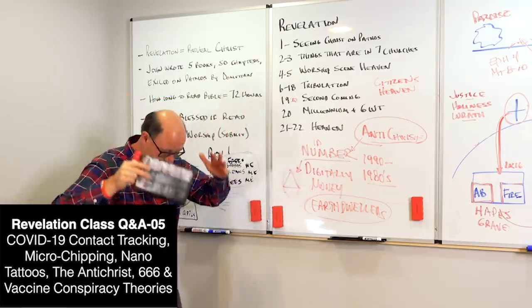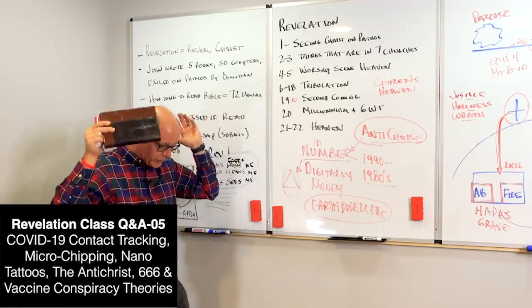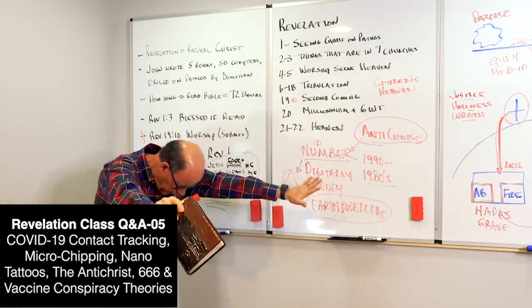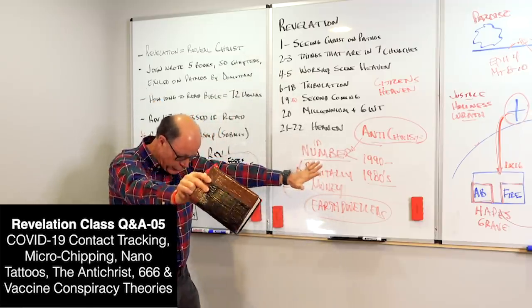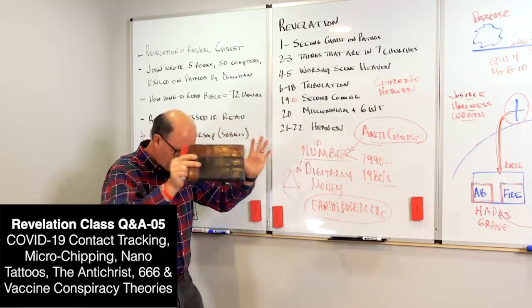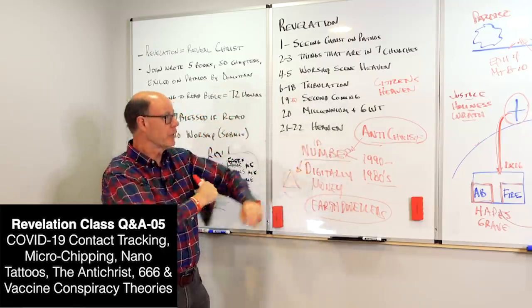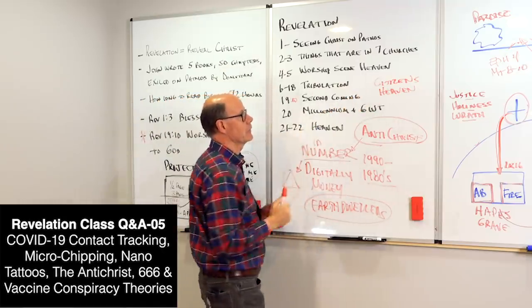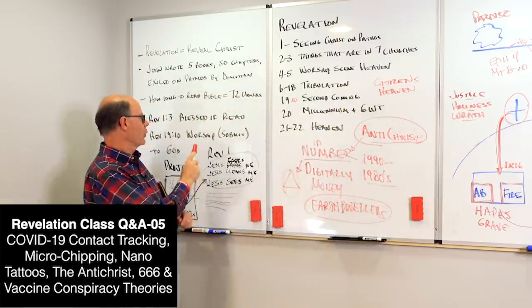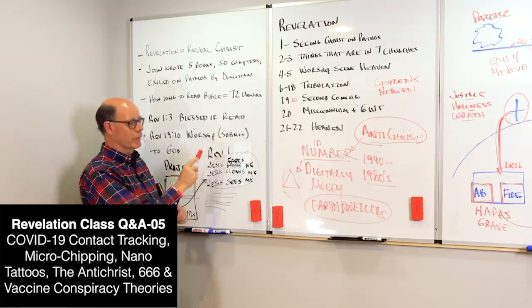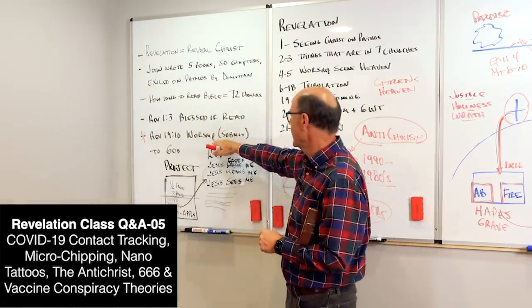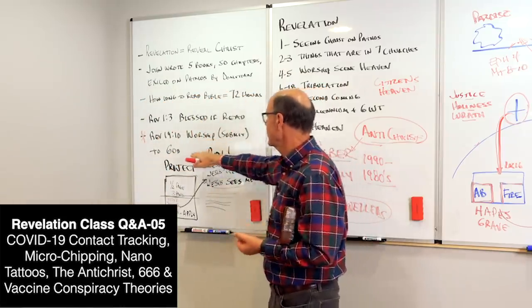Worship is submission to God. Earth dwellers will not submit to God. They won't worship Him. Citizens of heaven submit to God. Because remember, worship, the word in Greek is proskuneo, which means that you fall before and you just kind of lay down in front of and say, you are my God. I love and want to serve you. That's what a citizen of heaven does. That's what Revelation says worship is about. So Revelation 19:10, worship is submitting to God.